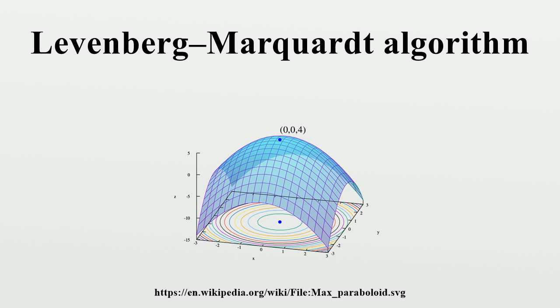If use of the damping factor lambda nu results in a reduction in squared residual then this is taken as the new value of lambda and the process continues. If using lambda nu resulted in a worse residual,